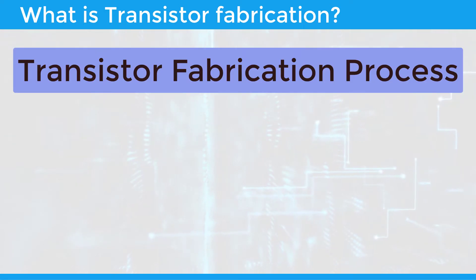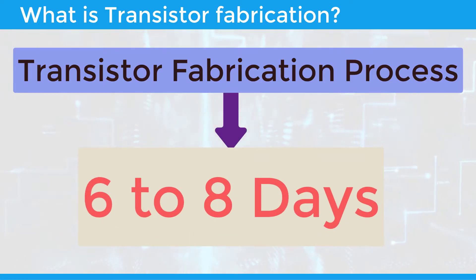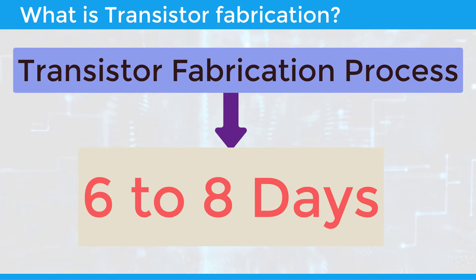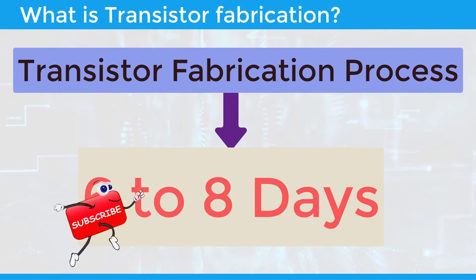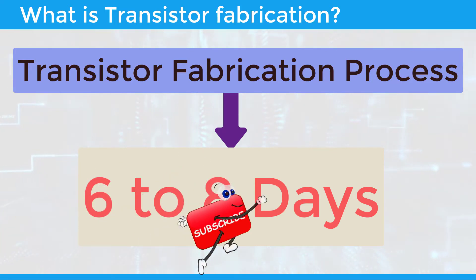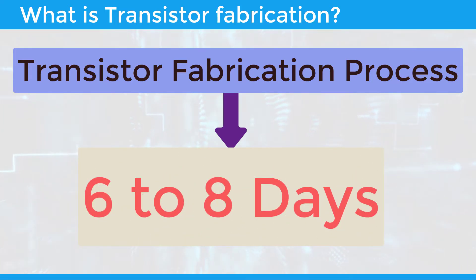The entire process of transistor fabrication requires 6 to 8 days. The alloy junction and diffused junction are the techniques used for the fabrication of the transistor. These techniques are explained here in detail.